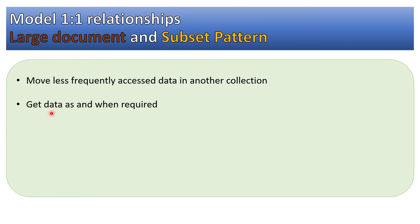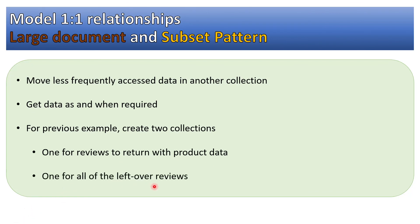It leads to performance improvement so that in case we want all the reviews, we can any time fetch data from other collection which is having all the data. There also we can fetch in the pagination view. For previous example, create two collections: one for reviews to return with the product data, second is one for all of the leftover reviews. That I just explained.